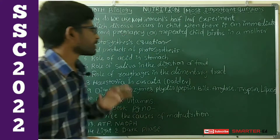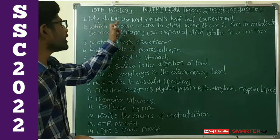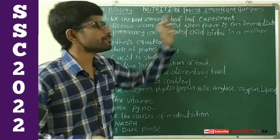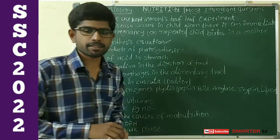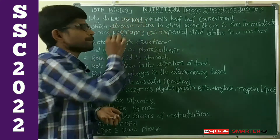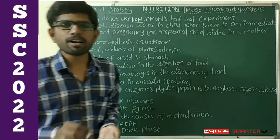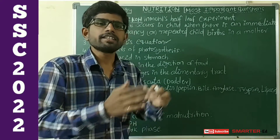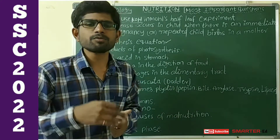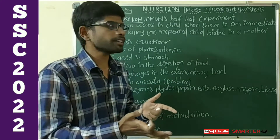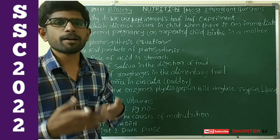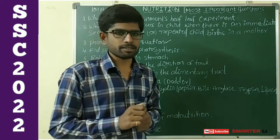See this first question: why do we use KOH in the molds-off leaf experiment? KOH, which is potassium hydroxide solution, is used in that experiment. What is its purpose? It absorbs carbon dioxide.